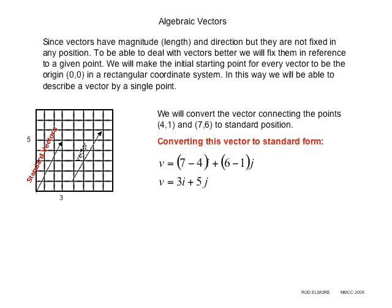Converting this vector to standard form, we're going to take 7 and subtract 4. That would shift it over so it was on the y-axis, and then the 6 minus 1 would shift it down to the starting point of (0,0). And now we're going to write it as v equals 3i plus 5j. i is in the x direction, and j is in the y direction. So algebraically, this will be that vector.